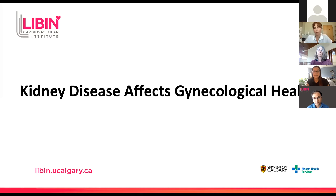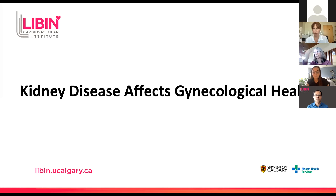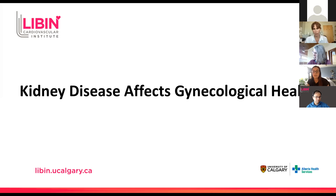Kidney disease is often thought of as a condition that mainly affects individuals in their older age, whose fertility is long gone. However, this disease can affect our sisters, daughters, and friends who are well within their reproductive years. The kidneys work to filter toxins and waste from our blood, and when the kidneys progressively lose function over time, they become less effective at preventing a buildup of toxins, which can affect the menstrual cycle — causing irregular periods or even stopping them altogether. The relationship between kidney disease and periods is not exclusive; both issues have significant effects on the cardiovascular system. Kidney disease increases cardiovascular disease risk, and similarly, both irregular periods and earlier menopause are significant cardiovascular risk factors.